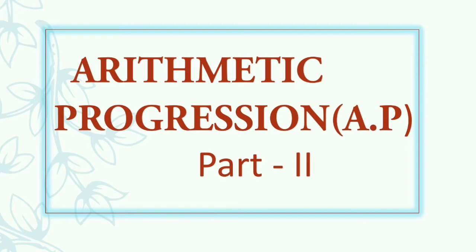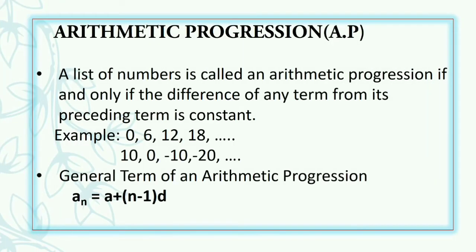Before that, let us recall the definition of an AP. A list of numbers is called an arithmetic progression if and only if the difference of any term from its preceding term is constant. For example, 0, 6, 12, 18 with a common difference 6, and 10, 0, minus 10, minus 20 with a common difference minus 10. You have also learnt that the general term an can be obtained by the formula: an = a + (n−1)d. For example, a5 = a + 4d or a10 = a + 9d, where a is the first term and d is the common difference.